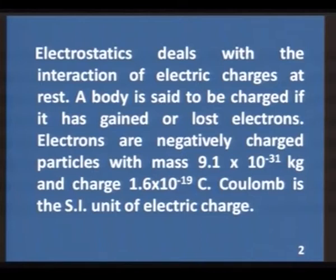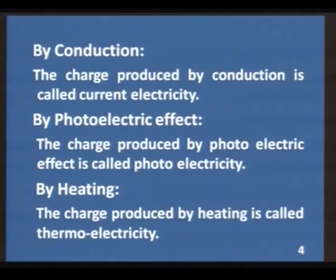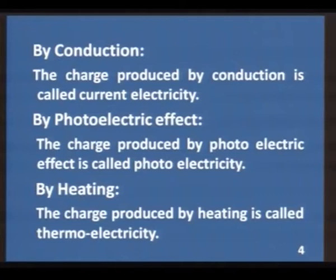If you want to produce electric charge, there are certain methods. One simple method is friction — the charge produced by friction is called frictional electricity. Another method is induction — the charge produced by induction is called induced electricity. By conduction, the charge produced is called current electricity. A modern method is the photoelectric effect, producing photoelectricity. Charge can also be produced by heating, which is called thermoelectricity.